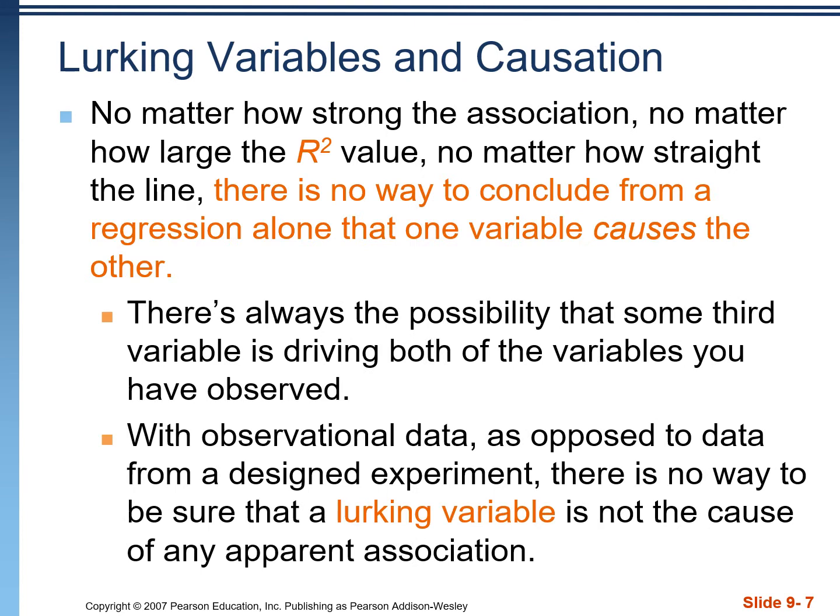In the previous notes video, we talked about how correlation is not causation and the concept of lurking variables — how there can be some kind of external source of variation that's affecting both of our variables at the same time. For that reason, regardless of how strong the correlation is, regardless of how strong the R-squared value is, we can never say that one variable is causing the other one.